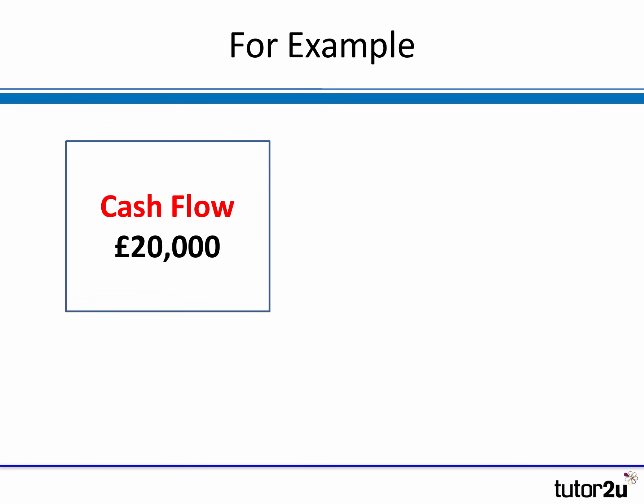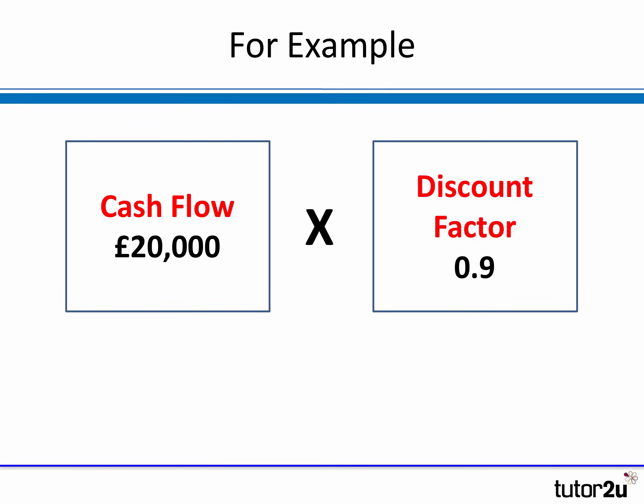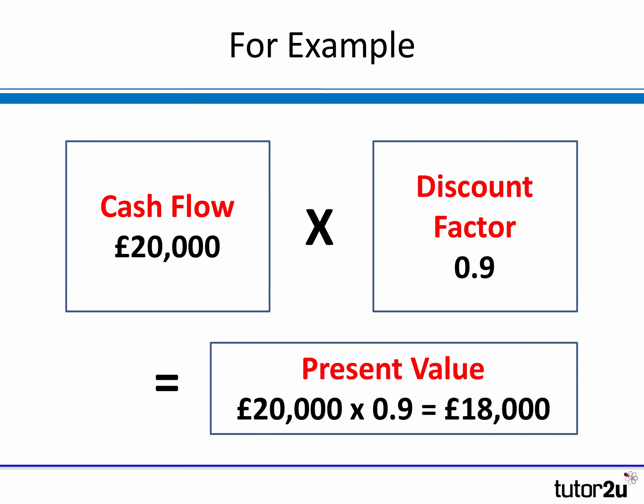Let's have a look at an example. Let's say the cash flow was £20,000, and the discount factor — perhaps a 10% discount factor in a year's time — is roughly 0.9. So the present value of that £20,000 is actually £18,000. That's the value now of that £20,000 cash flow discounted from the future.